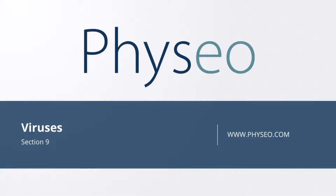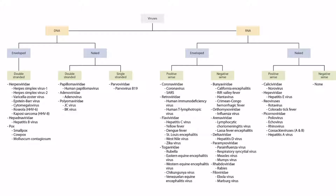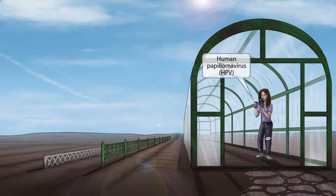Welcome to Section 9 of Viruses. This is our virus overview figure, and in this video we'll be discussing Human Papilloma Virus, or HPV. This scene will take place in a garden. The owner of the garden is taking a break and drinking some Pepsi off to the right. Pepsi sounds like Papilloma, so it will be our symbol for Human Papilloma Virus.